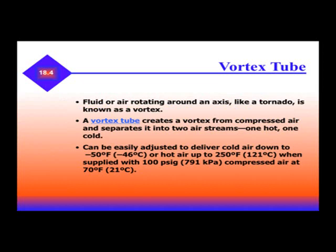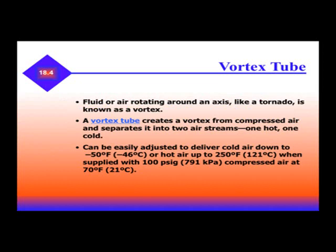The next type of refrigeration we're going to talk about is a vortex tube. Fluid or air rotating around an axis like a tornado is known as a vortex. A vortex tube creates a vortex from compressed air and separates it into two air streams, one hot and one cold. It can be easily adjusted to deliver cold air down to negative 50 degrees or hot air up to 250 degrees when supplied with 100 psi compressed air at 70 degrees.